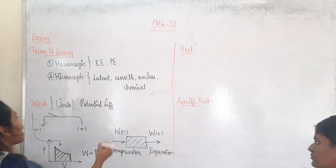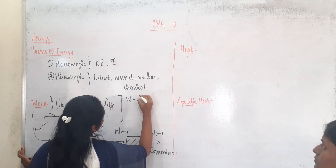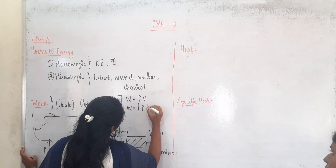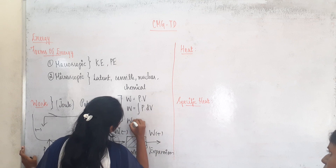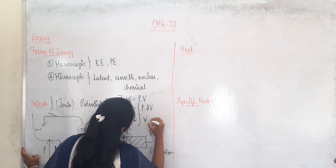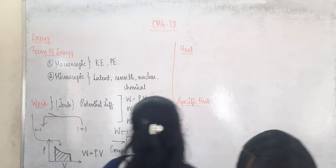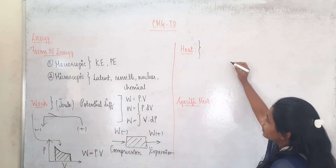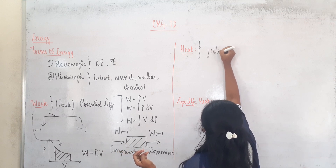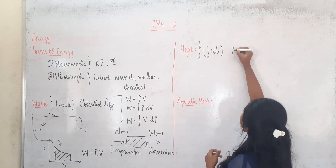We can represent that as W = P·V. The different formulas to calculate work are: W = P·dV, W = integral of P·dV, and W = integral of V·dP. This is all about work. Now we will come into heat. Heat is also a form of energy and in the same way the SI unit for heat is joule.